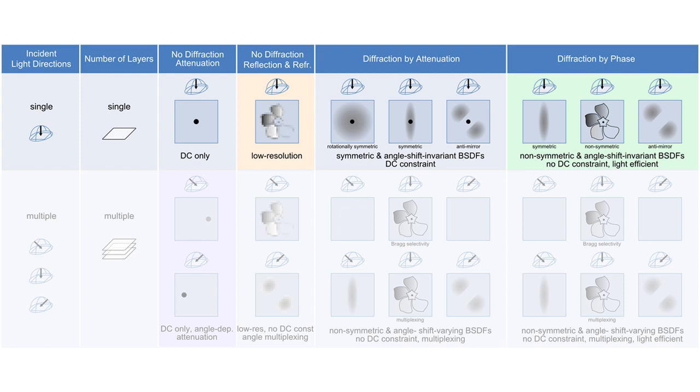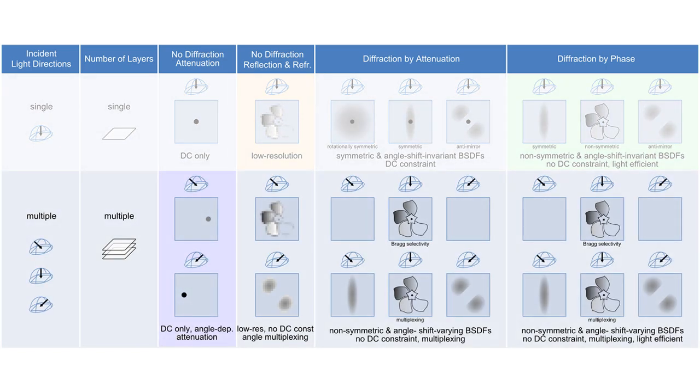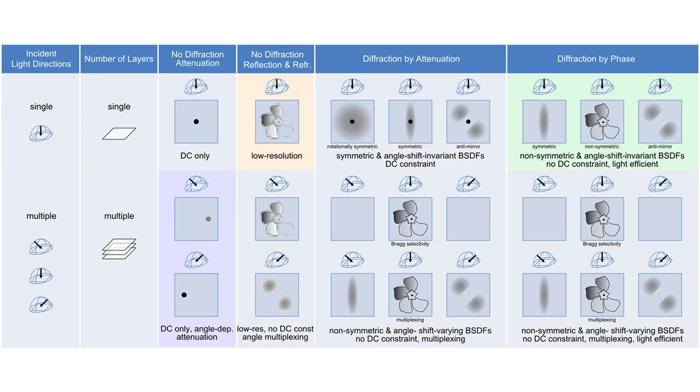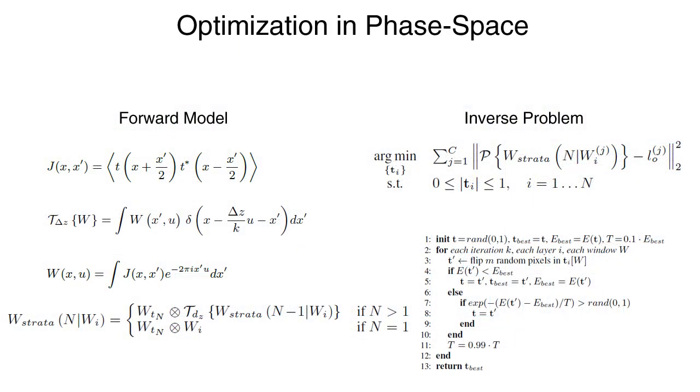For instance, non-symmetric BSDFs can be generated via refraction. Unfortunately, all single layer approaches are rotation shift invariant. This and other limitations can be overcome using diffraction created by stacked layers of attenuating or refractive materials. In this category, such configurations offer the highest possible number of degrees of freedom for BSDF design. We derive a mathematical framework that models this entire space.